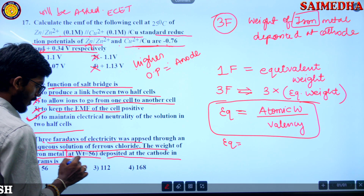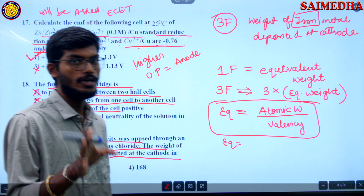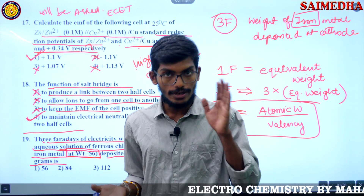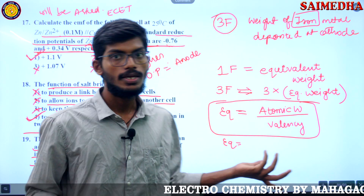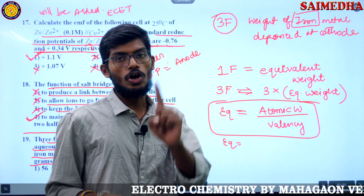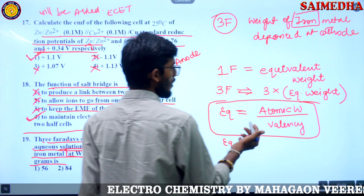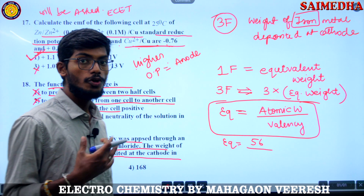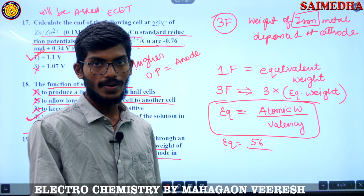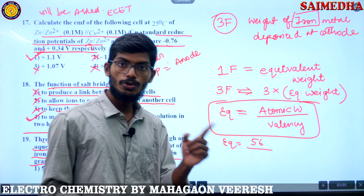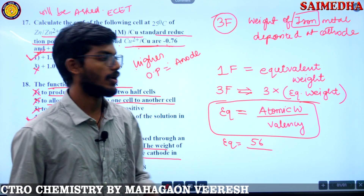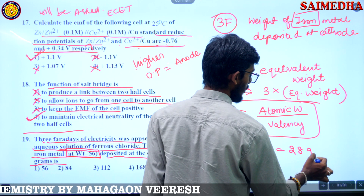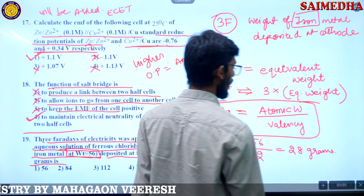The valency of iron (ferrous) is 2. So equivalent weight of iron = 56 divided by 2 = 28 grams. Three Faradays will give us 3 × 28 = 84 grams. Remember: silver valency is 1, so its equivalent weight equals its atomic weight, 108 grams. Copper and iron both have valency 2.